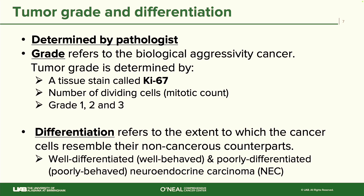The second thing we look at is the differentiation of the neuroendocrine tumor — the extent to which the cancer cells resemble their non-cancerous counterparts. If we're dealing with a pancreatic neuroendocrine tumor, we look at how much it resembles the normal pancreas. The classification is well differentiated — I like to think of that as well behaved — and poorly differentiated, which are poorly behaved neuroendocrine neoplasms. This brings up the difference between neuroendocrine neoplasm, neuroendocrine tumor, and neuroendocrine carcinoma.